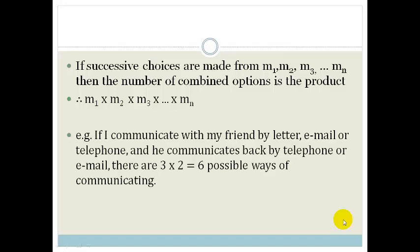Let me show you an example. If I communicate with my friend and I communicate with her by letter, email or telephone, so how many ways can I communicate with her? I can communicate with her three ways and he, sorry it is a guy, communicates back by telephone or email. Then there are six possible ways of communicating because I can communicate three ways and he can communicate two ways. So therefore six possible ways of communicating.